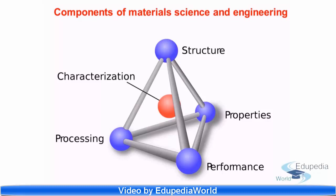So we see five things: one is structure, properties, performance, processing and characterization. These four are the ends of the tetrahedron. So what does each of them mean?